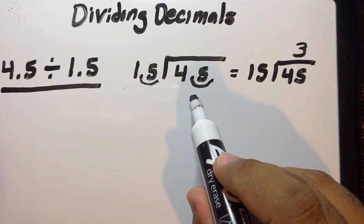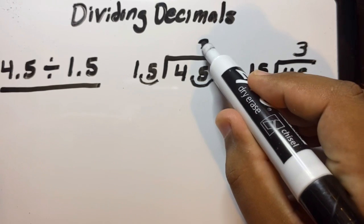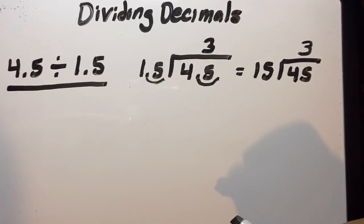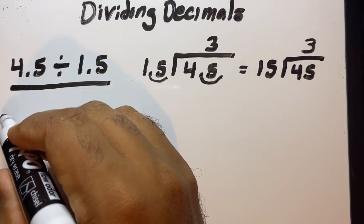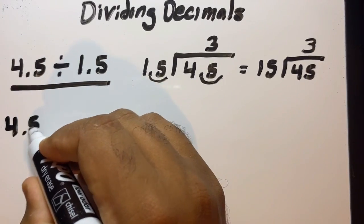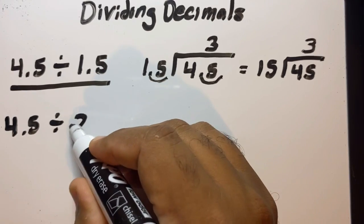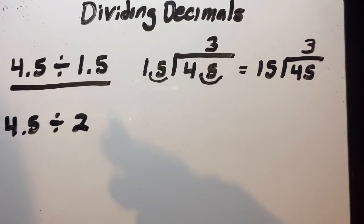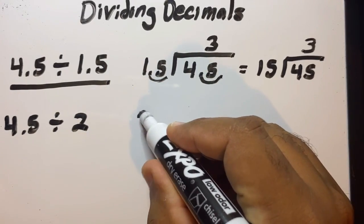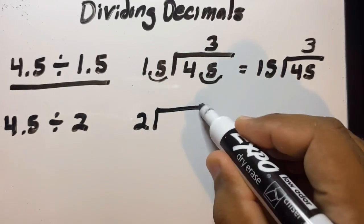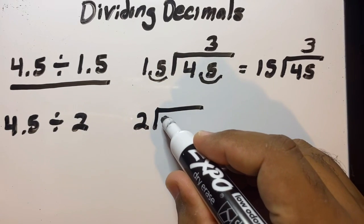But what if we're dividing a decimal number by a whole number, let's say 2? No problem, we'll do the same thing. The number on the right goes on the outside, the number on the left goes on the inside.